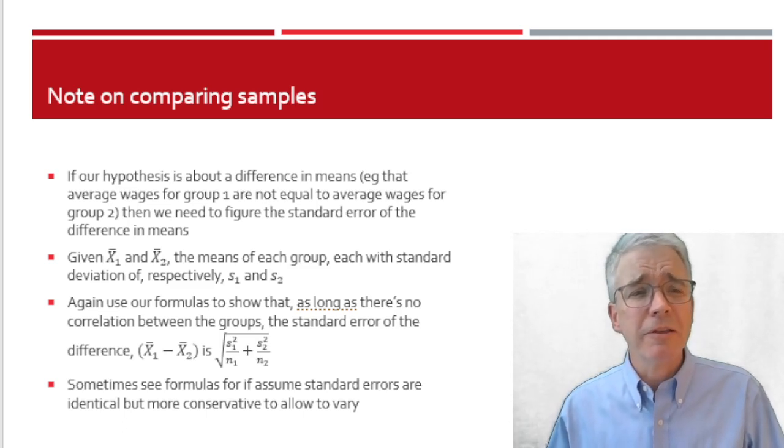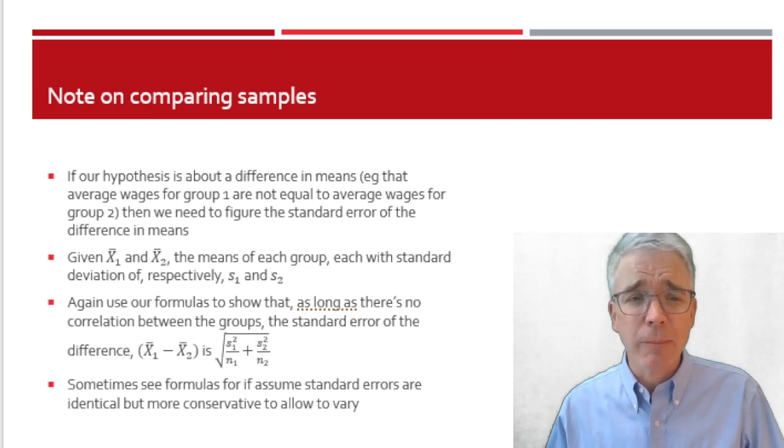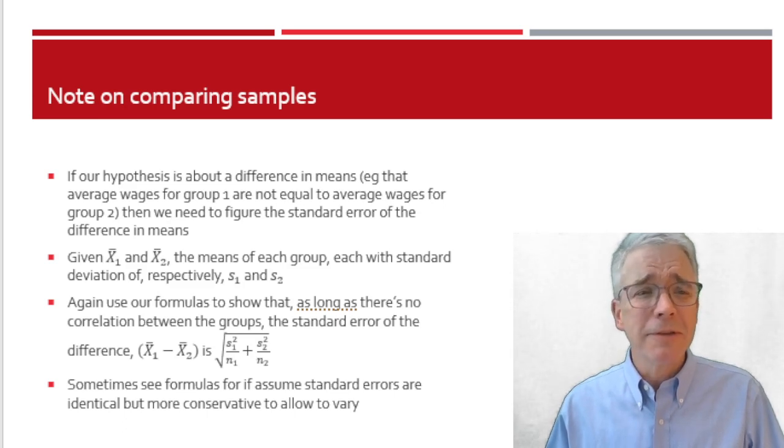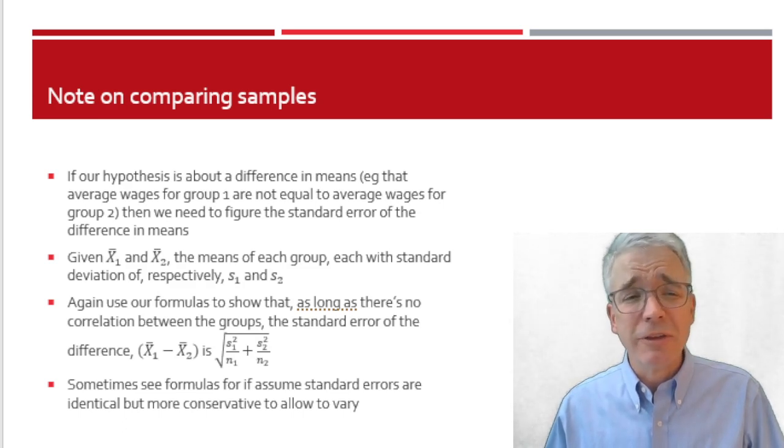Sometimes you see other formulas, I think in Hawks they go through some of those, that if we're willing to assume the standard errors are equal, then you could use a different formula. But that gives rise to the question, how do you know? Why would I think the means are different, but the standard errors are identical? It's kind of a strange or difficult assumption. Generally, it's more conservative to estimate each different standard error, then the tests are going to be a little more conservative, trading off between type 1 and type 2 error.